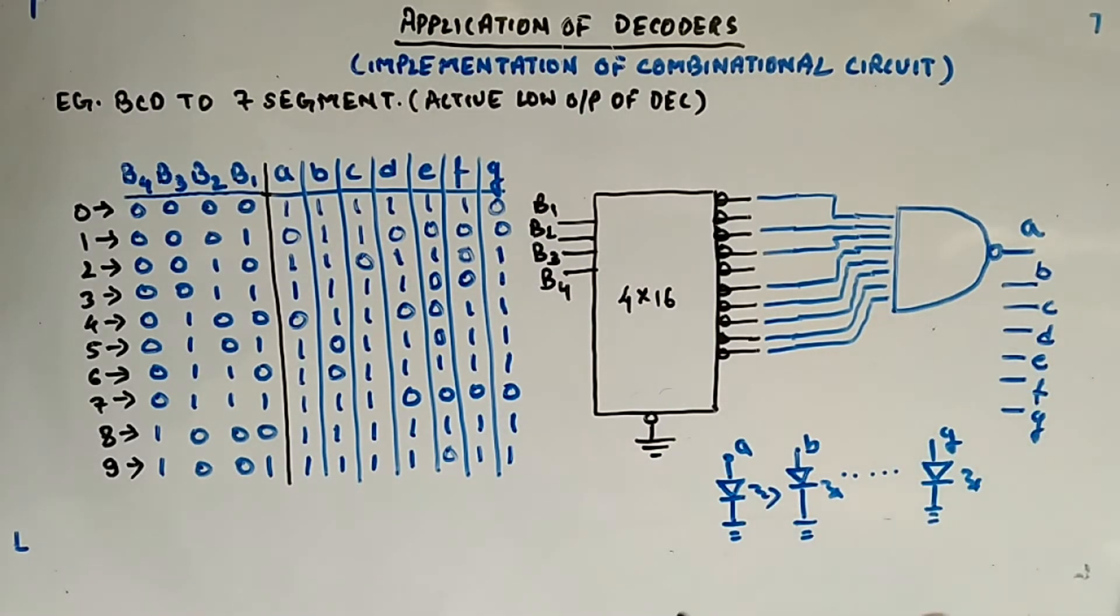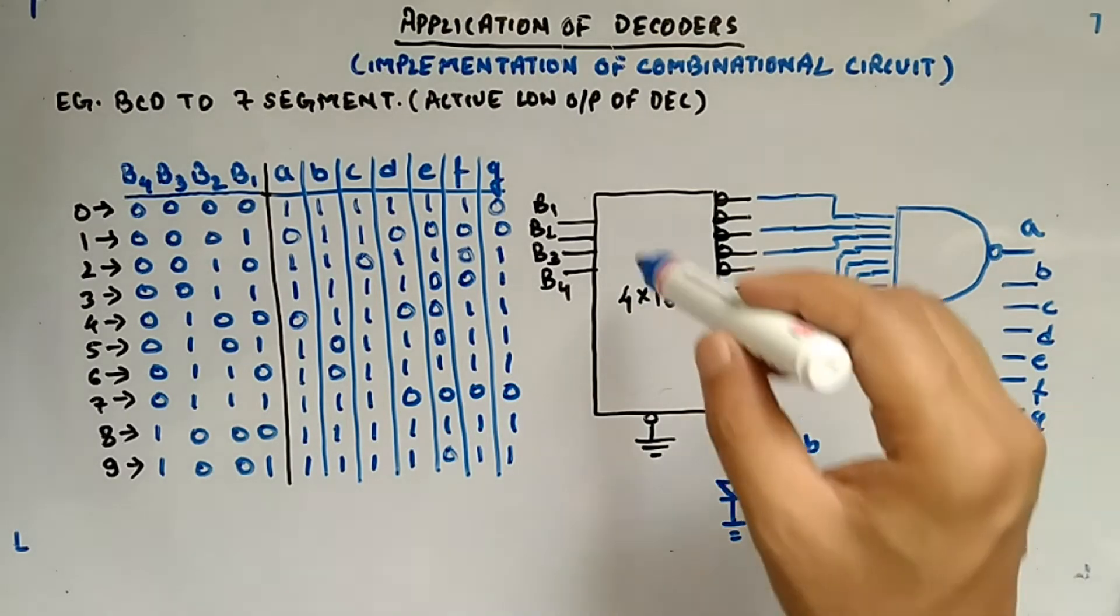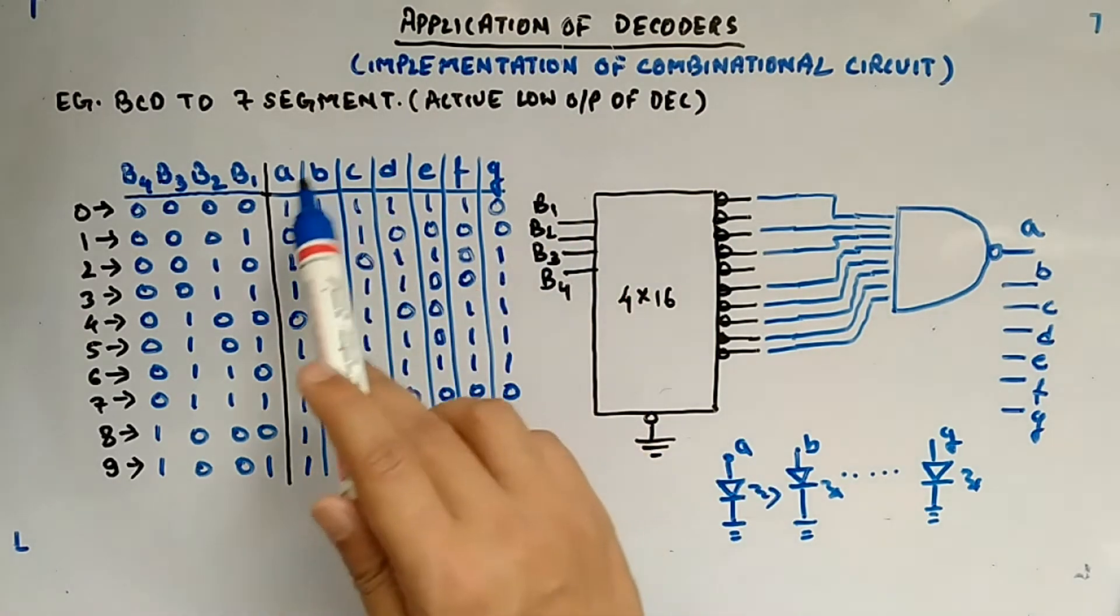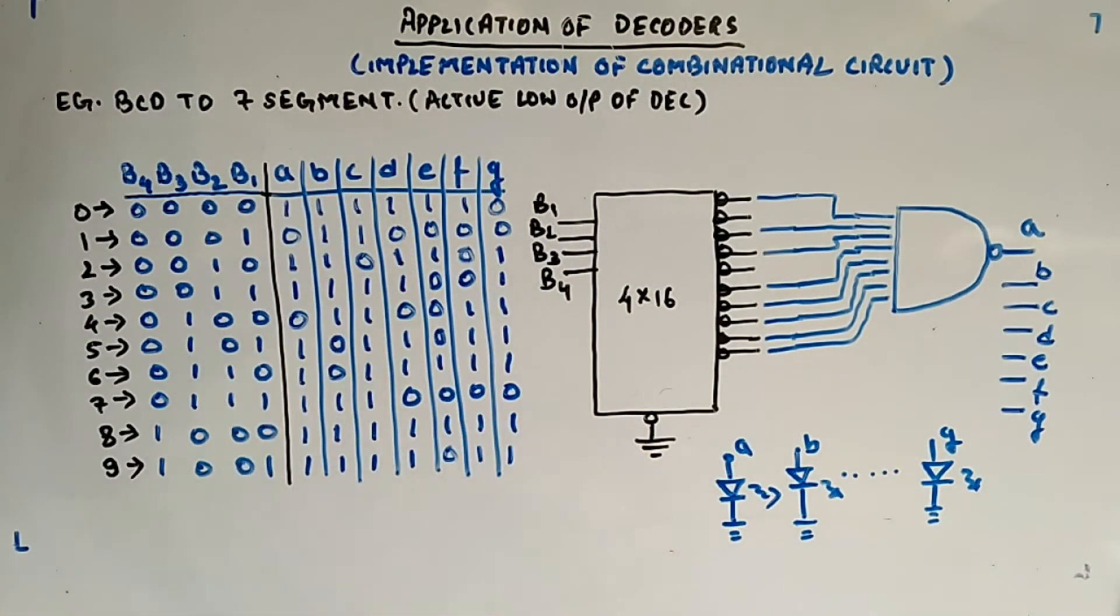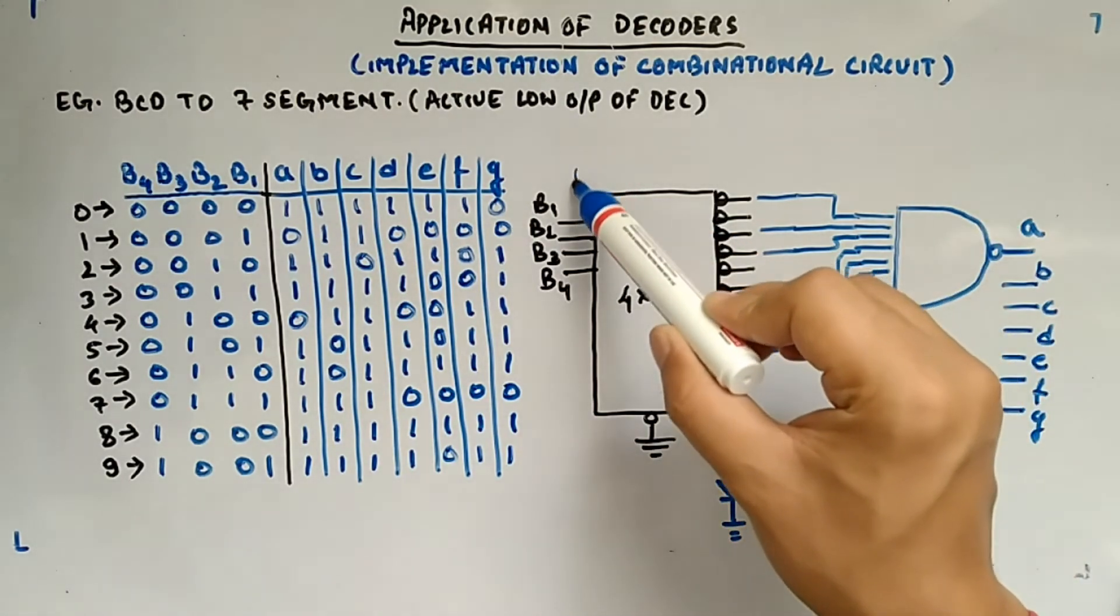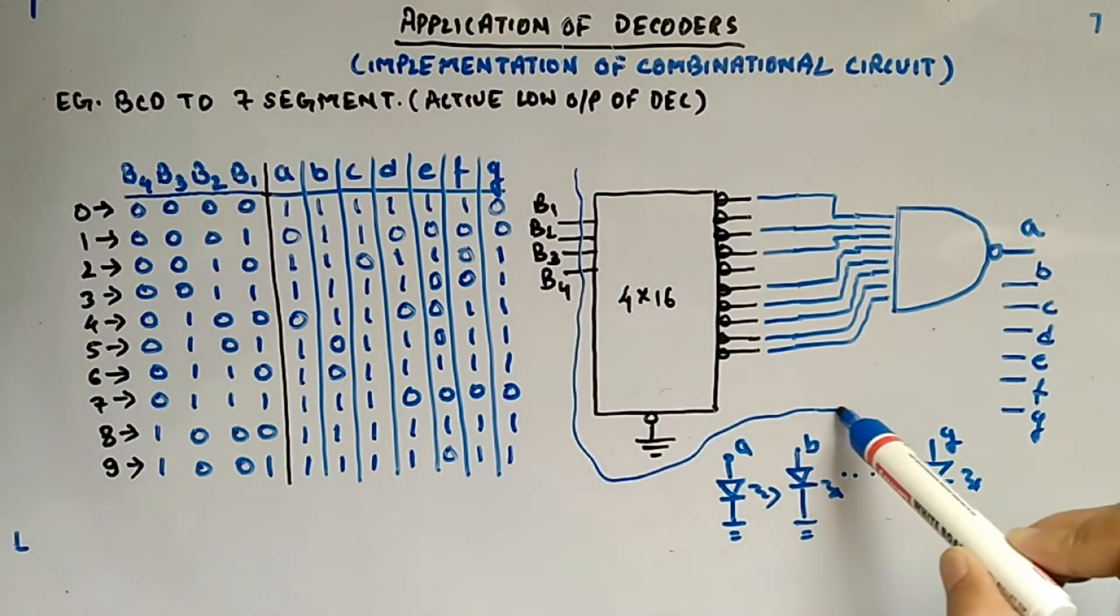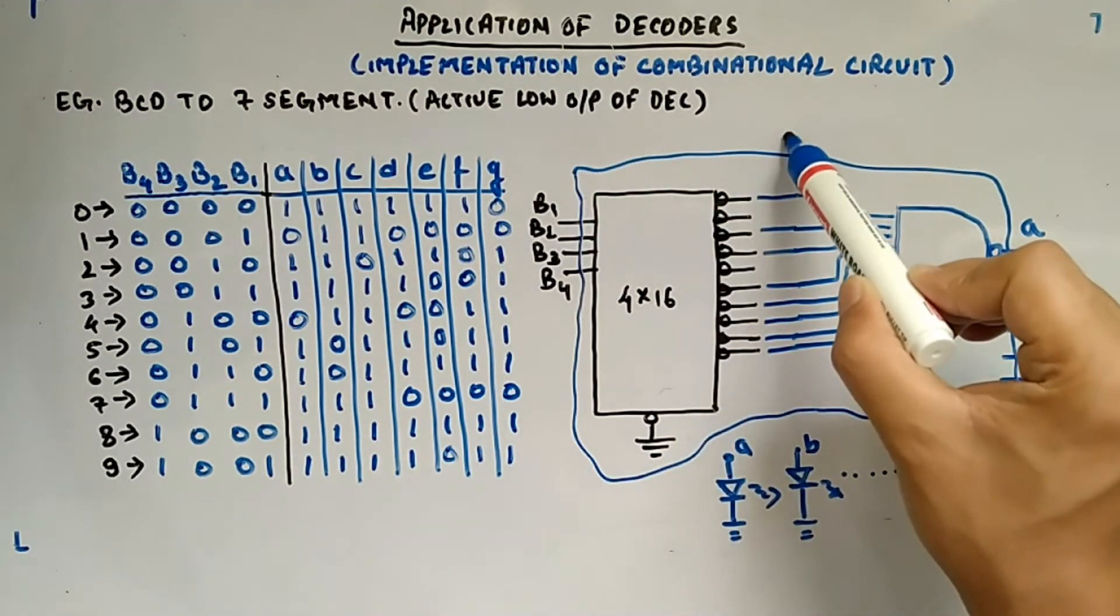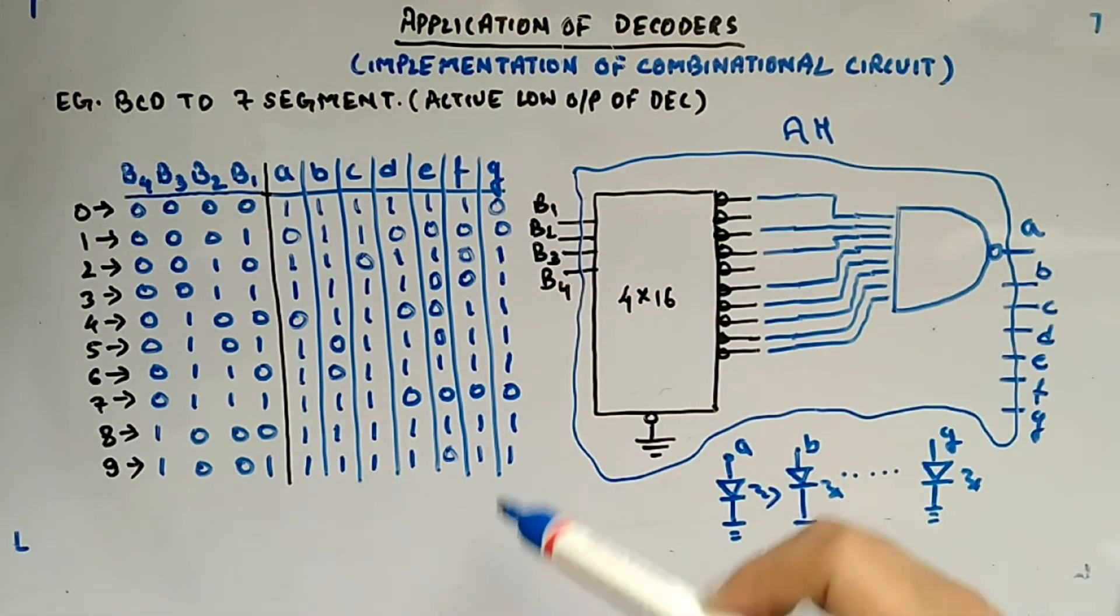So now what I will do is, you might be aware of now how we can design through decoder. Now one thing I want to mention here is the overall output. You might have noticed that I have not changed the truth table, this is active high truth table only. Even though I have changed the decoder and NAND gate, this whole circuit is active high type, because when you are giving 0, 0, 0, 0, it is generating 1. This is active high type.